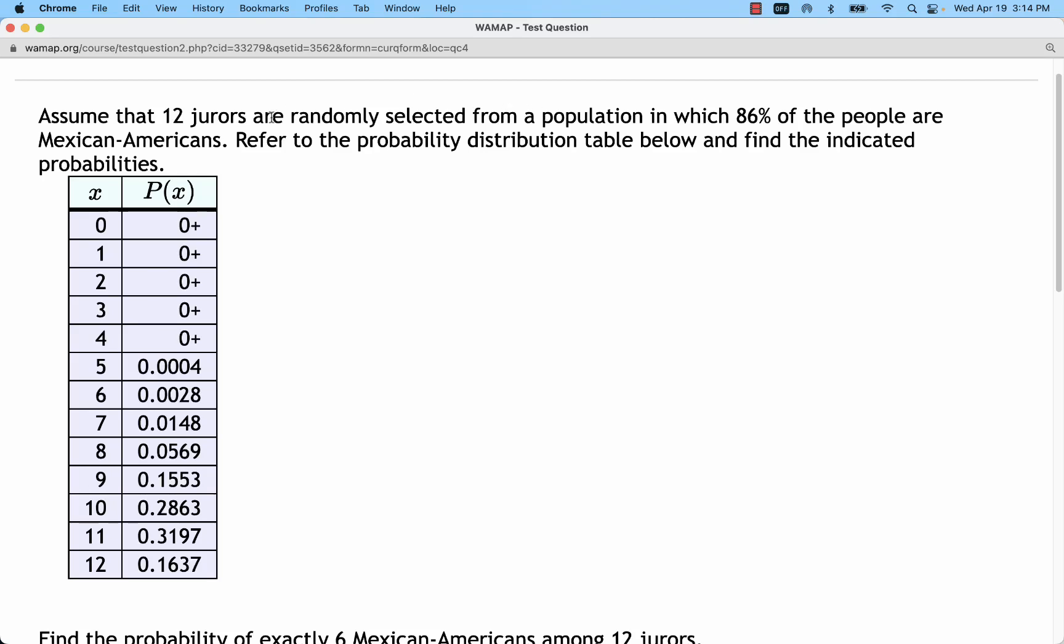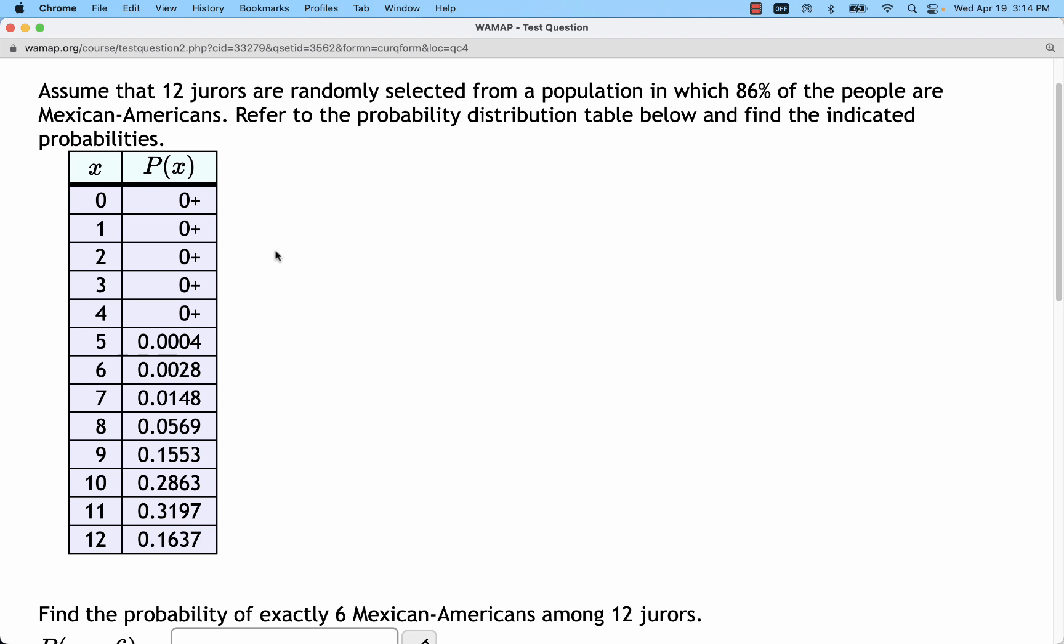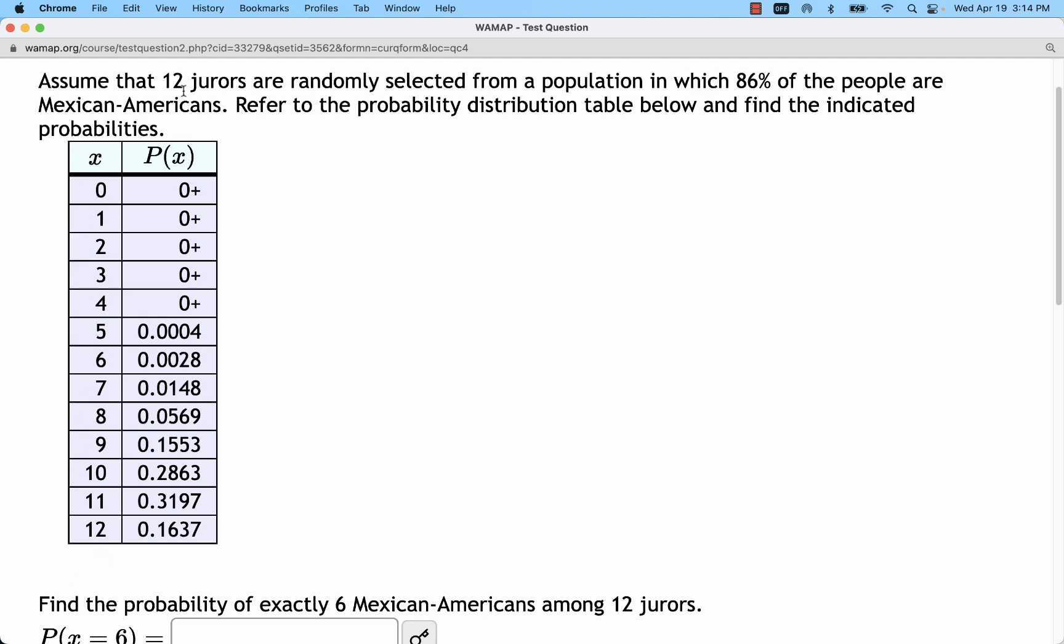This is a great problem because it's going to tie together a lot of concepts in this whole chapter. We're looking at a table that represents probabilities of having X number of Mexican-American jurors out of 12.